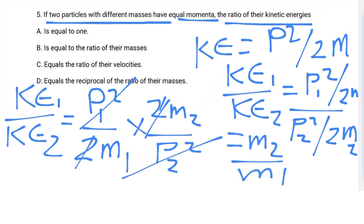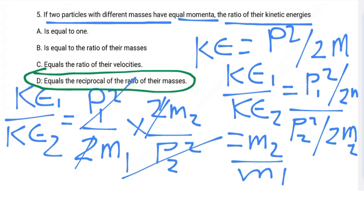So the kinetic energy ratio is not equal to the ratio of the masses directly, but rather the inverse: KE1/KE2 = m2/m1. This is the answer, and we can now move on to part two.